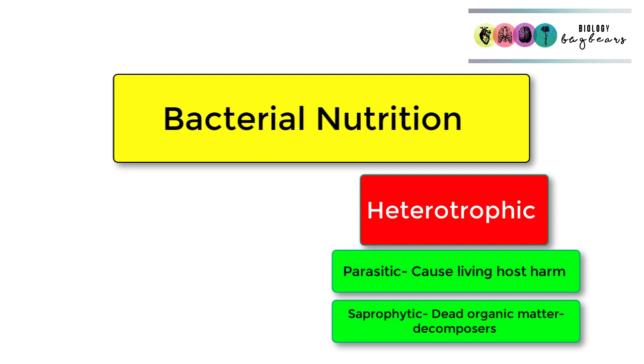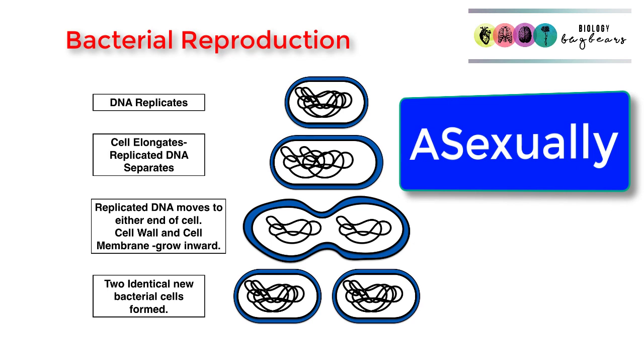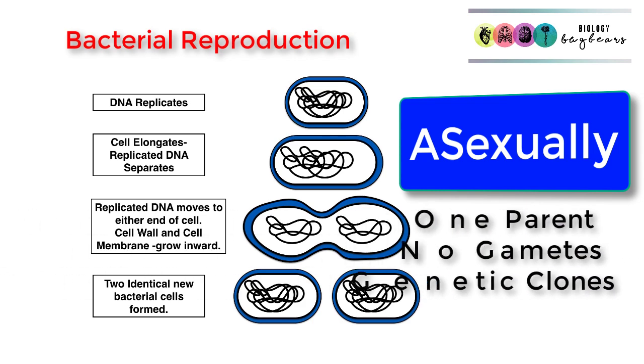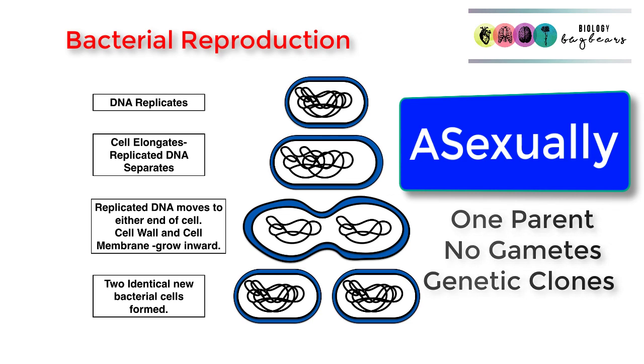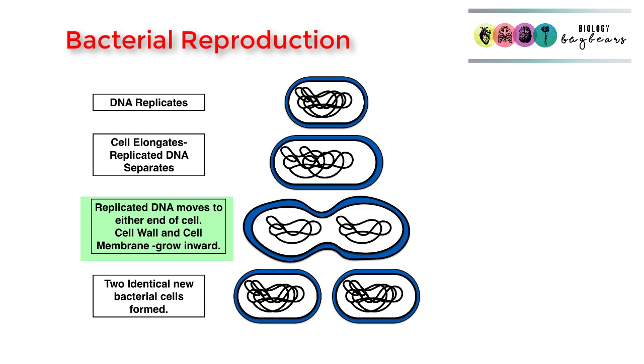Bacteria reproduce asexually and the method is called binary fission. Asexual reproduction involves one parent only and no sex cells, and results in the reproduction of genetic clones. The bacterial DNA replicates, the cell elongates so it gets wider, and the replicated DNA strand separates and starts to move to the other end of the cell. The cell wall and cell membrane grow inwards and eventually two identical bacterial cells are formed.